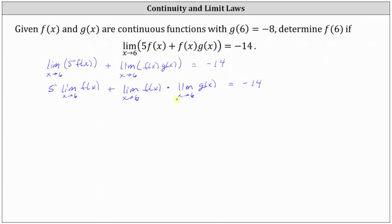Now, because both f of x and g of x are continuous, we determine the limits by performing direct substitution. On the left, 5 times the limit of f of x as x approaches 6 equals 5 times f of 6, plus the limit of f of x times the limit of g of x as x approaches 6 equals f of 6 times g of 6. We are given that g of 6 equals negative 8.